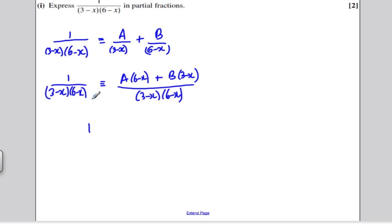So 1, because the denominators are the same, the numerators must now be the same. So 1 is equivalent to A(6-x) plus B(3-x).